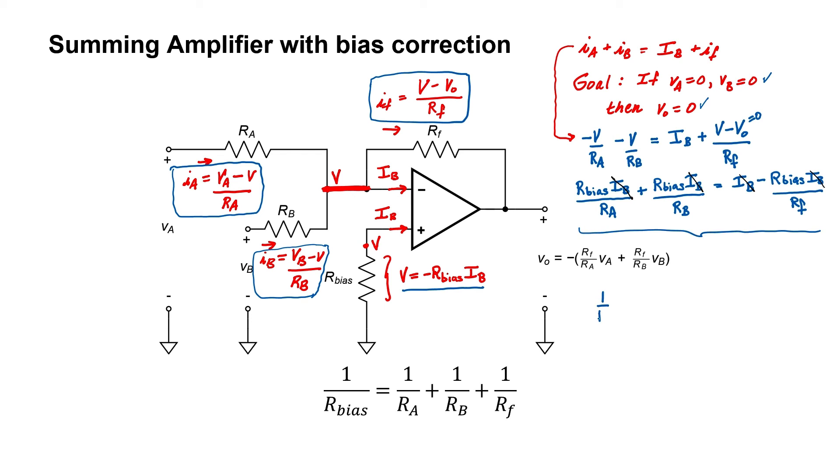I'm now going to rewrite that expression and substitute in the expression here for the bias resistor. I can take every term in this equation and divide it by R bias. What I've done is effectively derived the correct value for the bias resistor in order to eliminate the effect of the bias current on my expression for the output voltage.